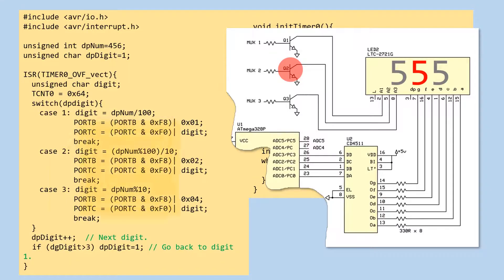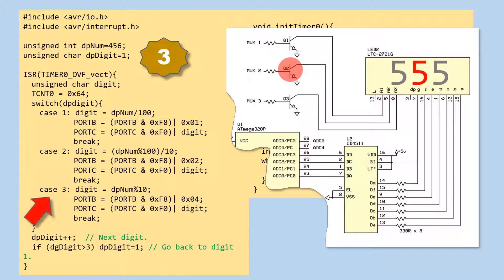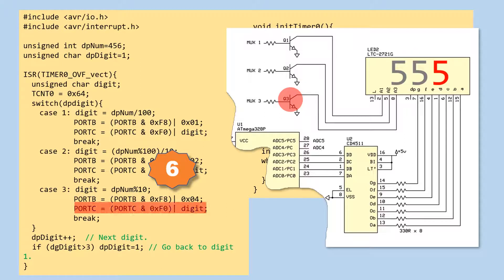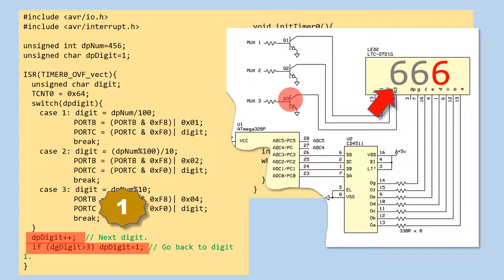10 milliseconds later, the timer interrupts again. dpDigit is 3, so case 3 will be executed. This instruction extracts 6 from dpNum. This instruction drives the third MUX transistor. This instruction sends the data 6 to the decoder. 6 is displayed on the third digit of the 3-digit display. dpDigit is currently 3, so it will be incremented to 4, and then this instruction resets it to 1, to indicate that the next digit to be displayed is the first digit again.